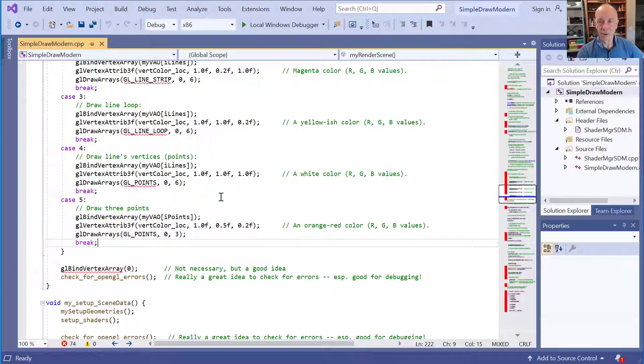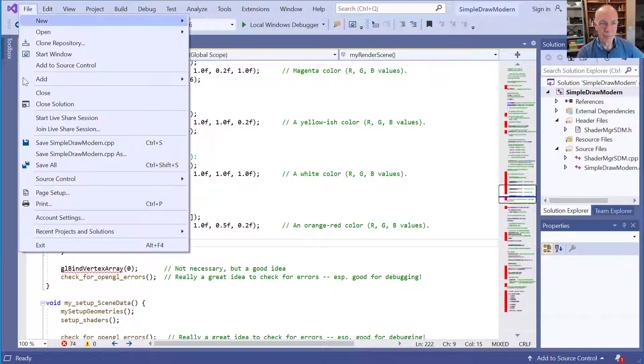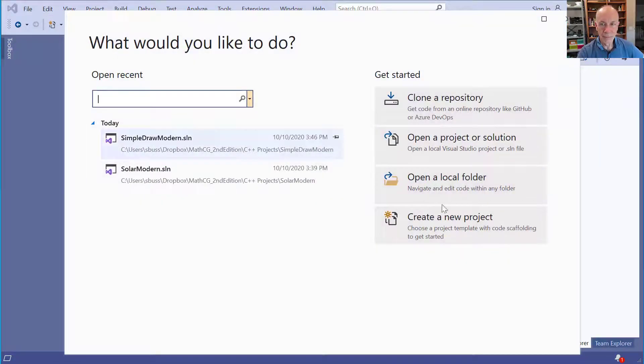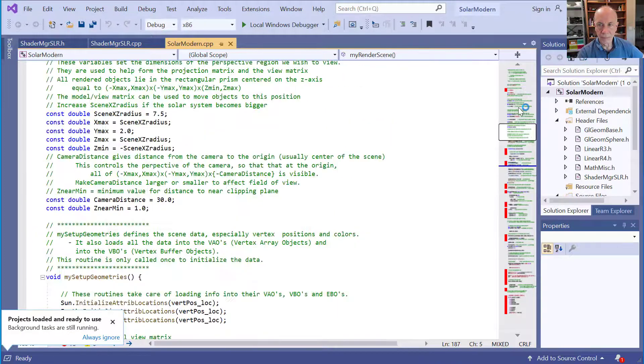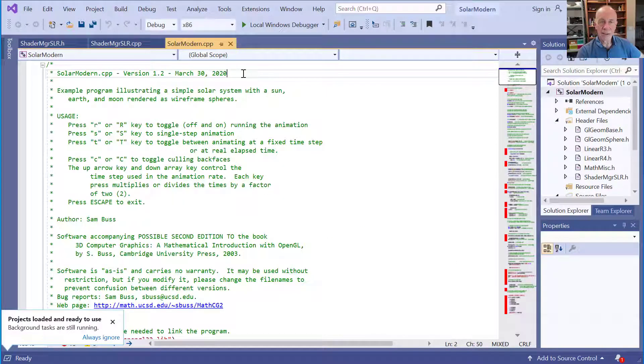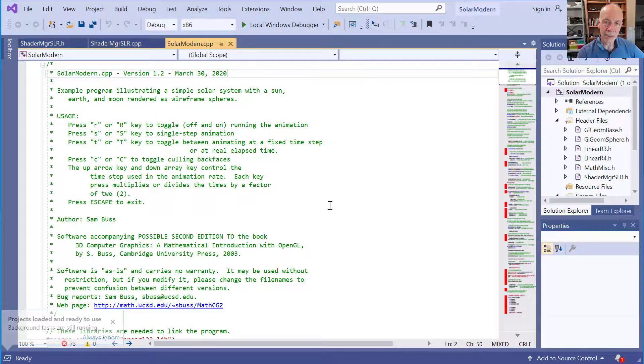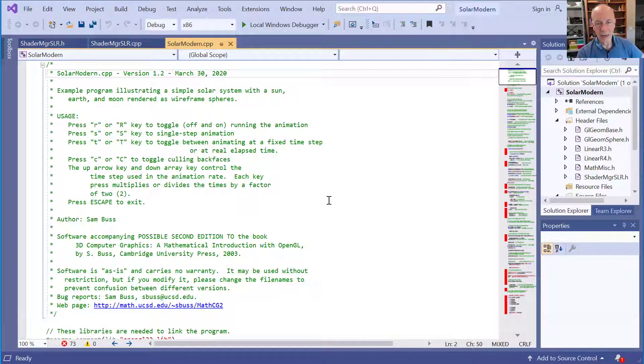So next we'll look at the Solar Modern program. So here's the Solar Modern program. The Solar Modern program uses the GLGeomSphere method to create the triangles for the spheres. So it doesn't do that explicitly. So the per vertex, vertex attributes are all encapsulated within the GLGeomSphere methods. But on the other hand, Solar Modern still uses generic vertex values for colors, and it uses, and what we're really interested here, is the uniform variables for the matrices.